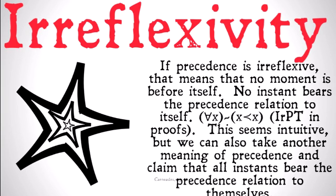If precedence is irreflexive, that means that no moment is before itself. No instant bears the precedence relation to itself. Or formally: for all x, it is not the case that x precedes x. This is represented as I-R-P-T in proofs.